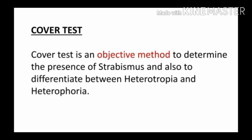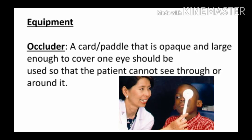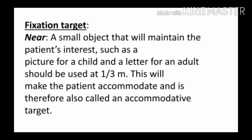The cover test is an objective method to determine the presence of strabismus and to differentiate between heterotropia and heterophoria. Objective means we do not need the patient's response. The equipment needed includes an occluder — which is opaque and can cover the patient's eye — and a fixation target. It is very important to perform the cover test at both distances: near and distance. The near fixation target is placed at one-third of a meter from the patient, so the patient can accommodate properly; this is why it is called the accommodative target.